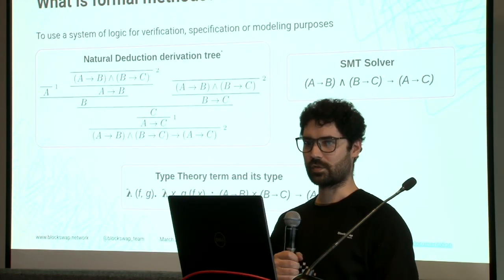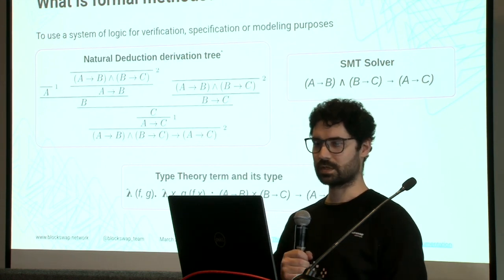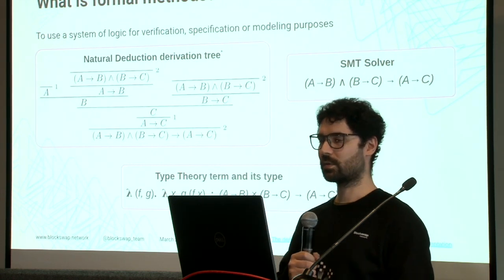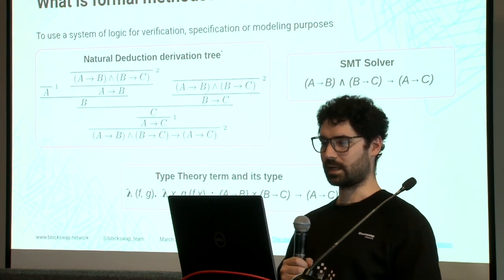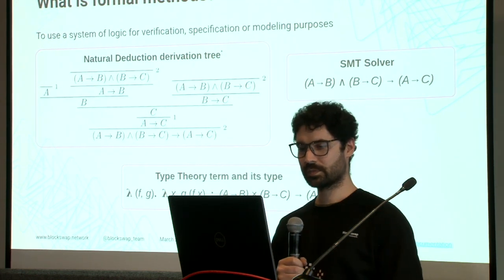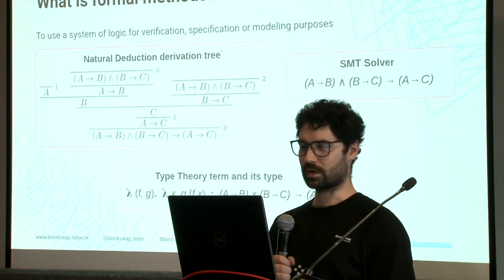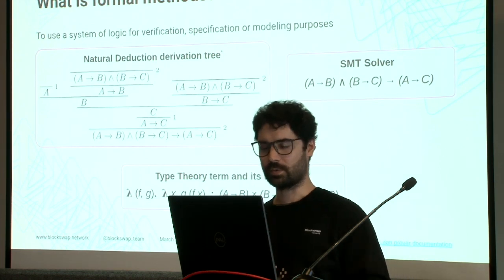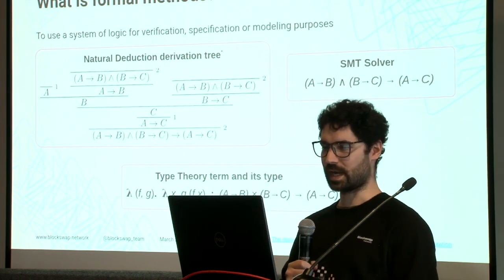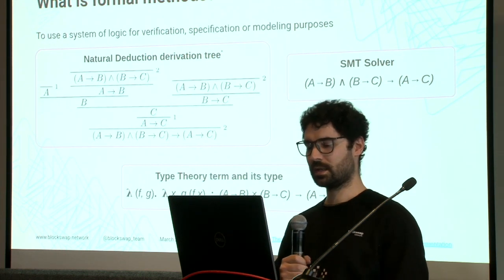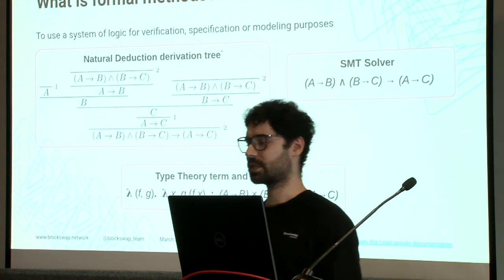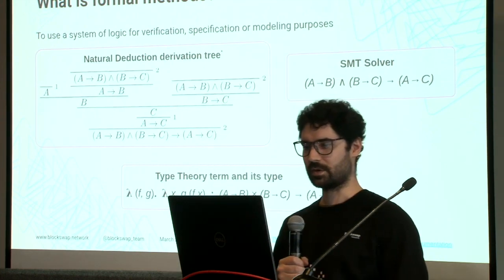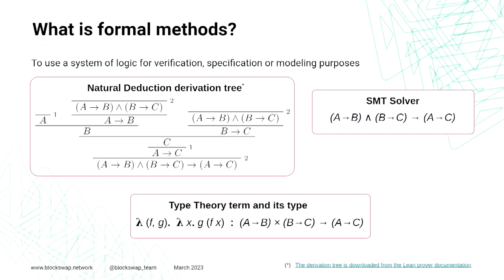Another alternative in Formal Methods is to use type theory. In type theory, instead of writing a proof tree, we write a type theory term to derive the conclusion. For example, if we want to prove that A implies B and B implies C, then A implies C. That is just function composition in type theory: if you have a function from A to B and a function from B to C, then we can construct a function from A to C.